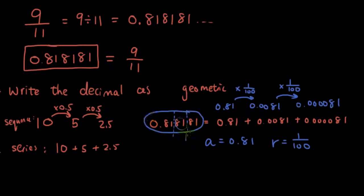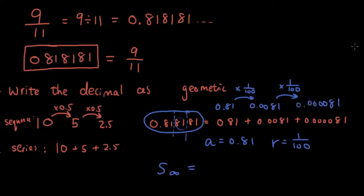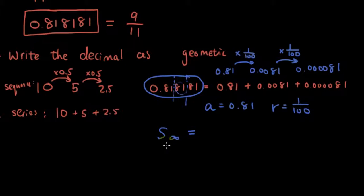So therefore, to convert this series into a fraction, all you have to do is use the equation for sum to infinity for geometric series, and that is sum to infinity equals a divided by 1 minus r. So if you forgot where this equation came from, have a look at our previous tutorial. So now we are going to substitute 0.81 where a is, and we will substitute 1 over 100 where r is.